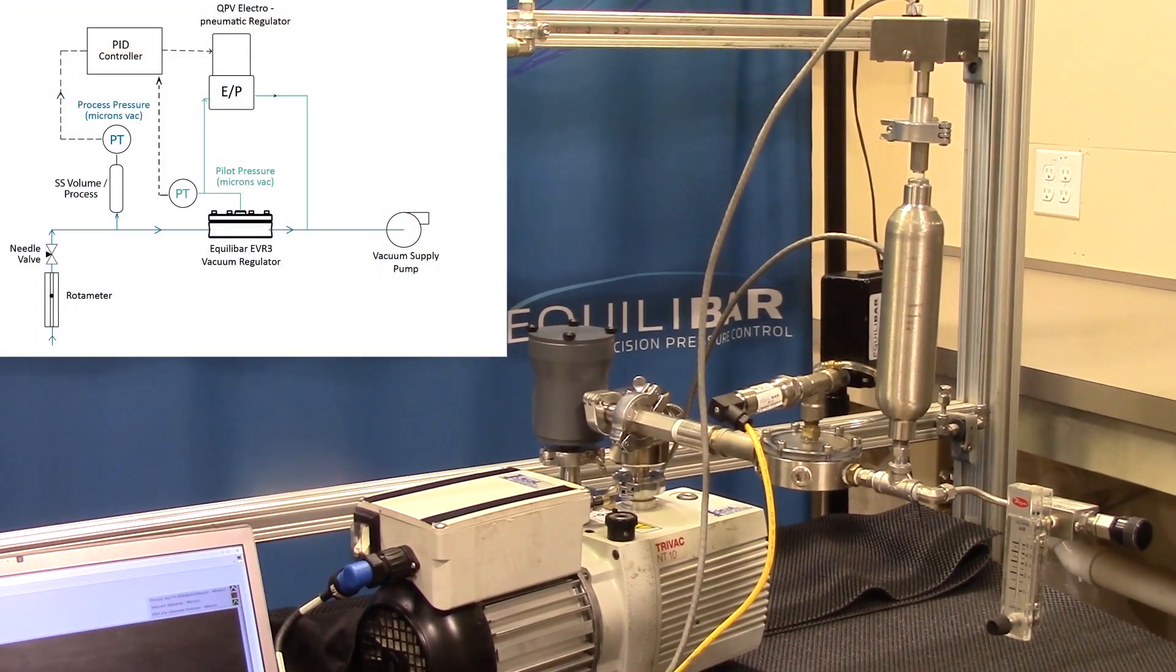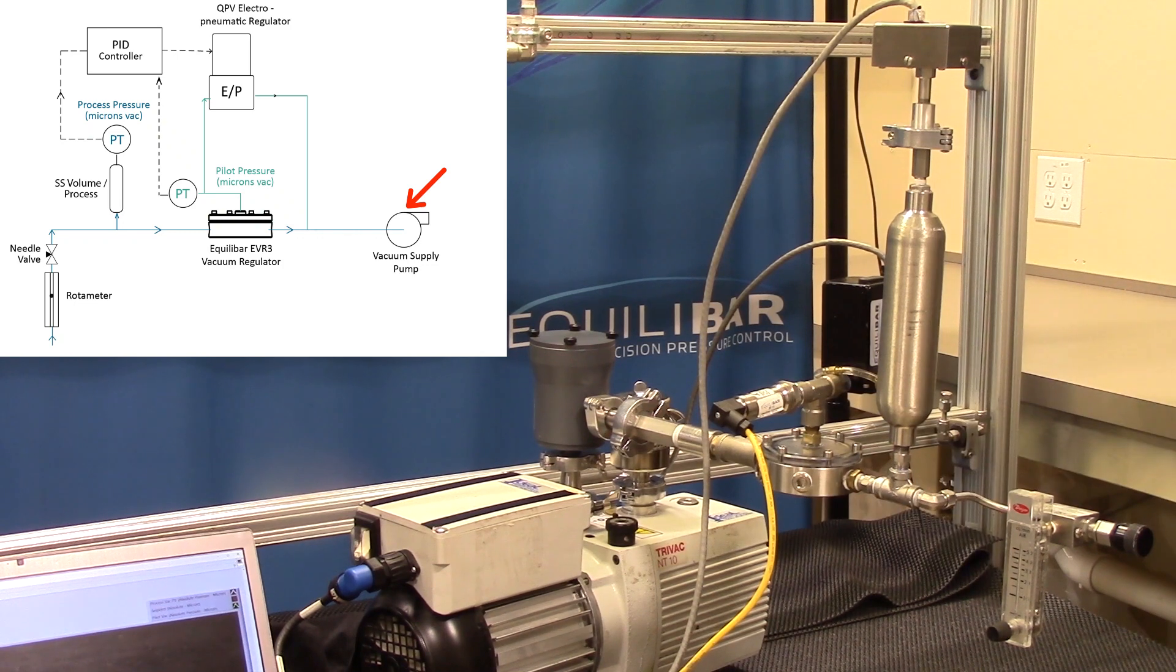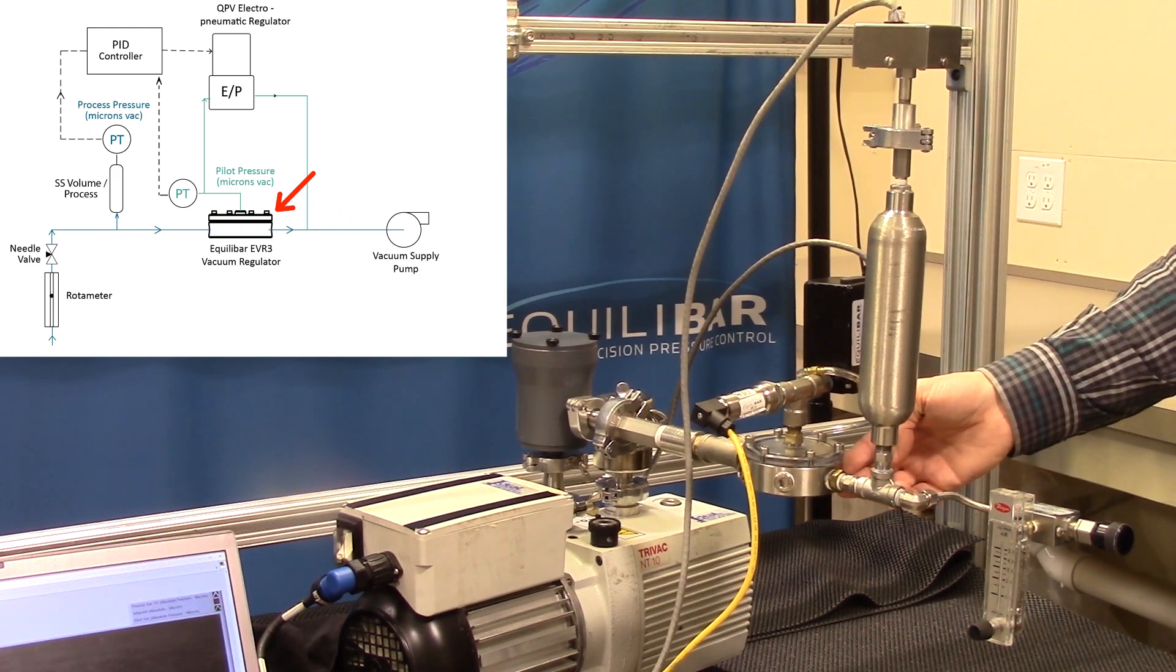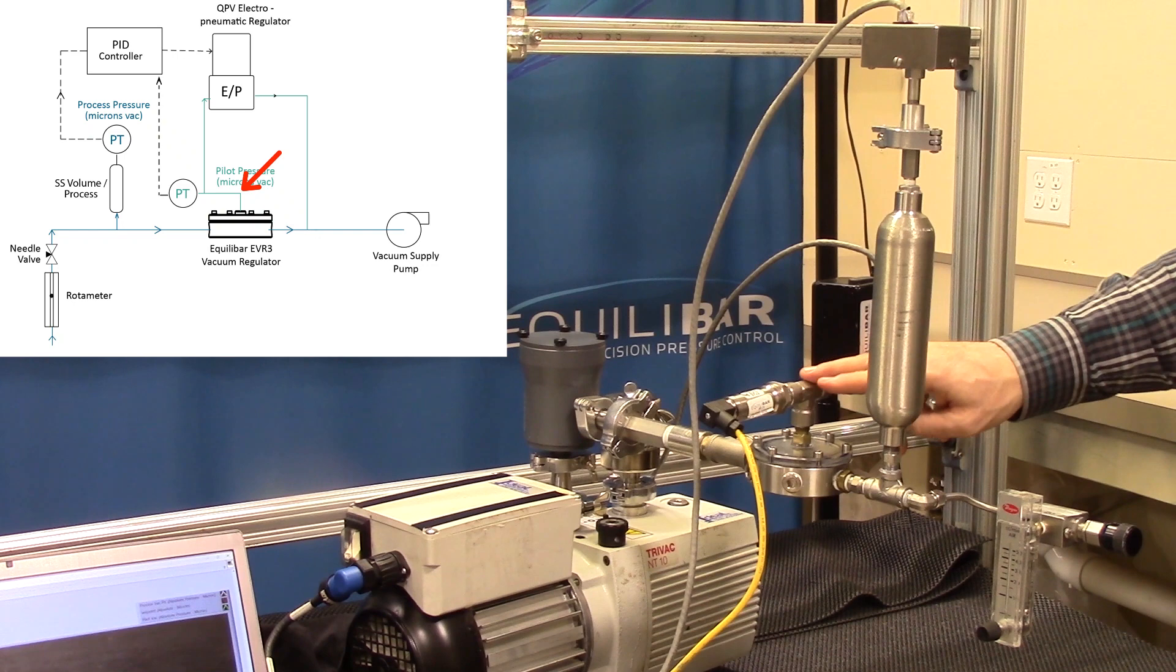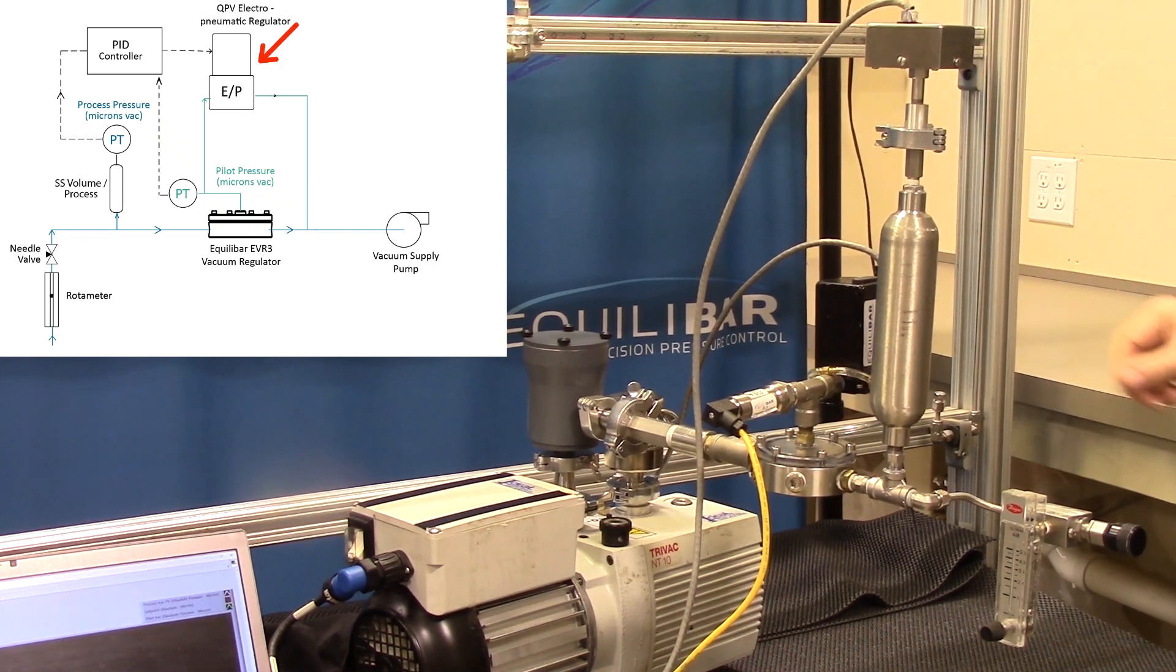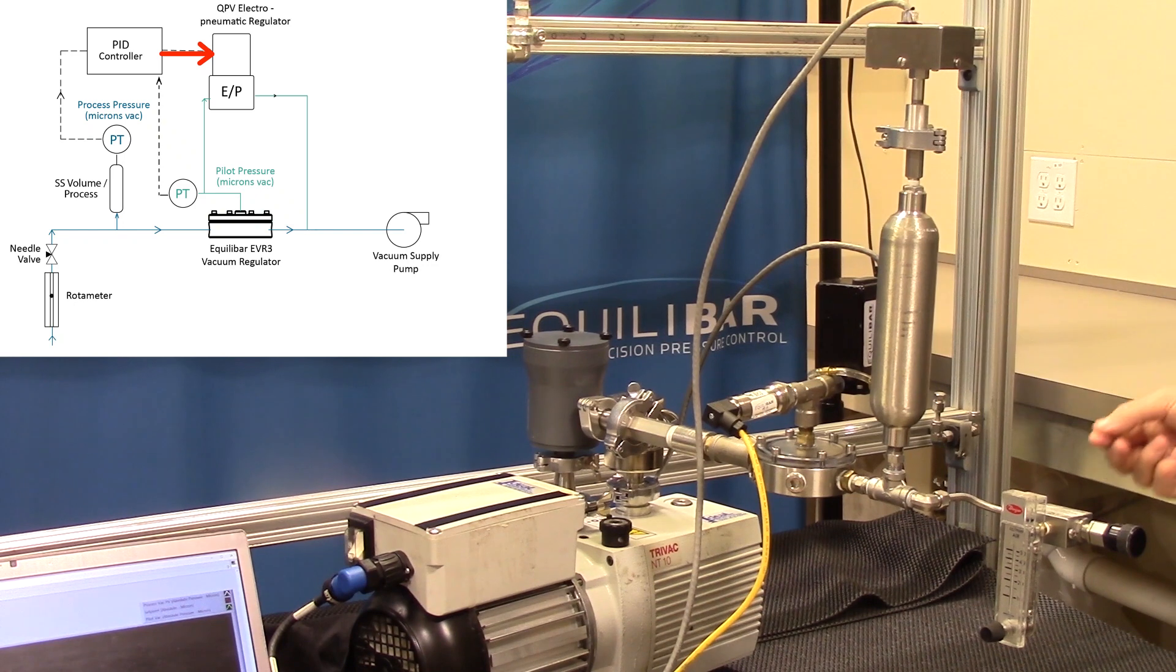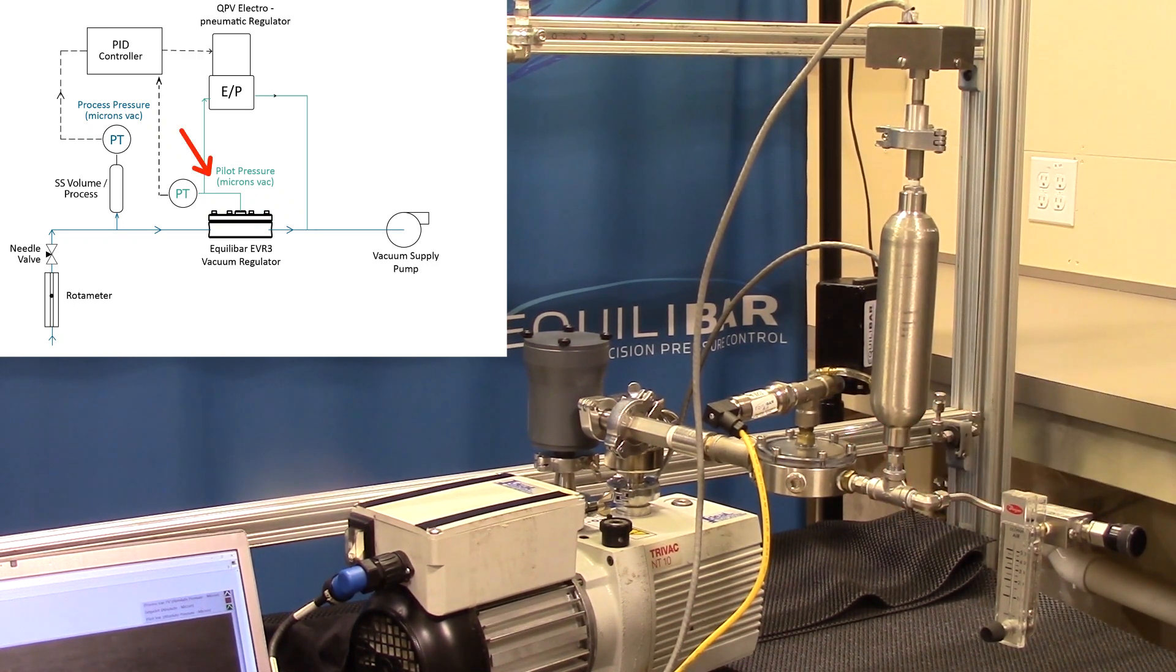Let's first look at the system setup. We will start with a vacuum pump such as this 10 ACFM oil piston pump. A stainless steel Aquilibar EVR3 vacuum regulator controls the vacuum process proportional to the vacuum pilot pressure on its dome. The pilot pressure is supplied by a QPV electronic pressure regulator which receives a command from the computer and produces a variable vacuum pressure to steer the Aquilibar vacuum regulator to its set point.